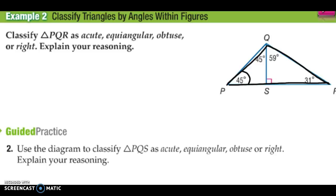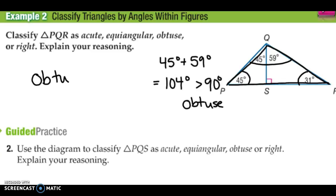So I look at this angle right here. Angle P is 45 degrees. Angle R is 31 degrees. And angle Q is actually made up of two angles. So 45 degrees plus 59 degrees equals 104 degrees. And you'll see when you have 104 degrees, that's greater than 90. So this is an obtuse angle, thus making it an obtuse triangle.